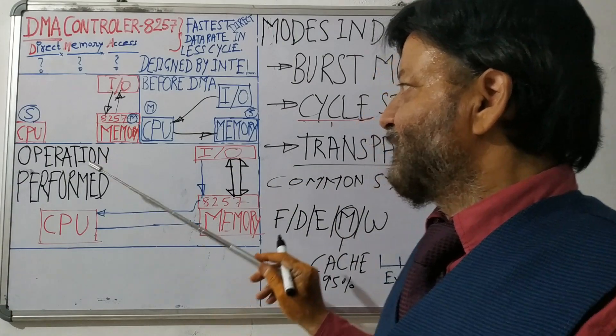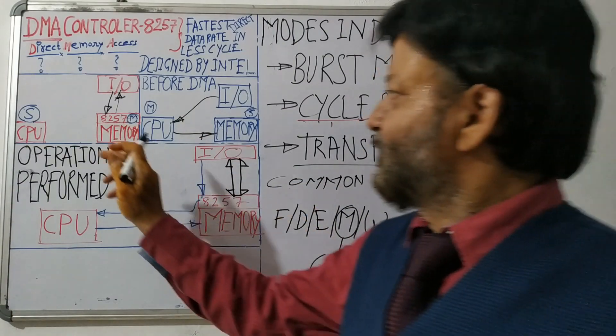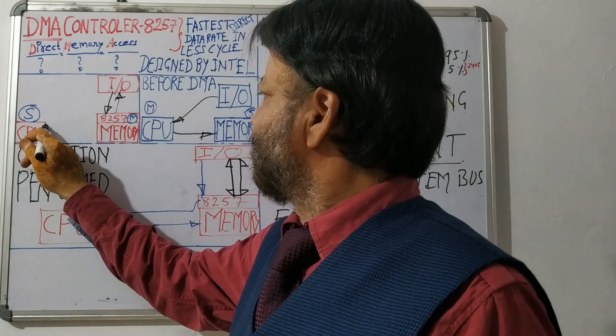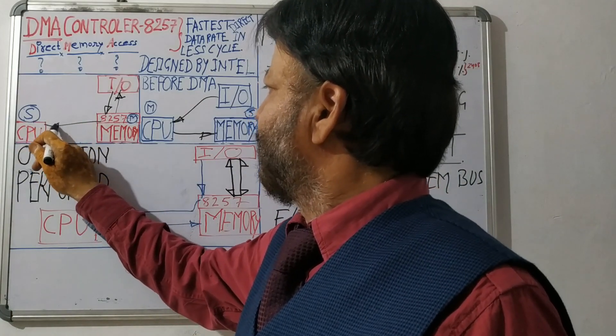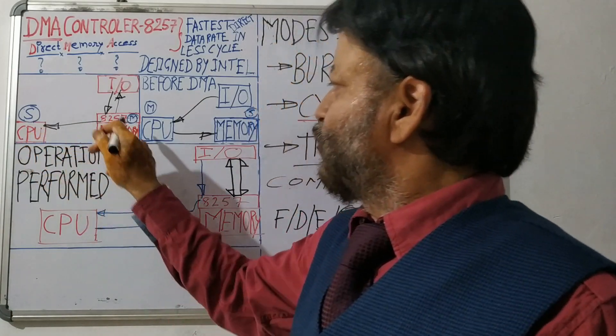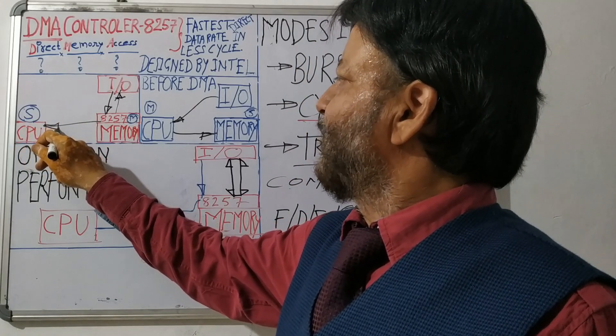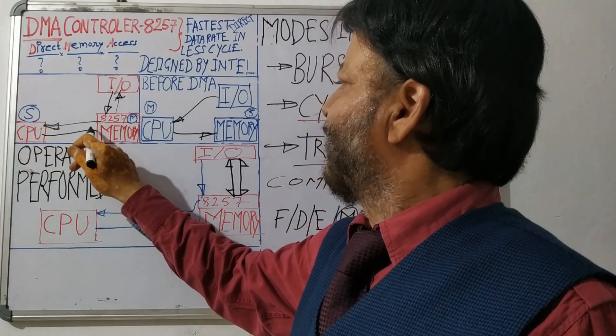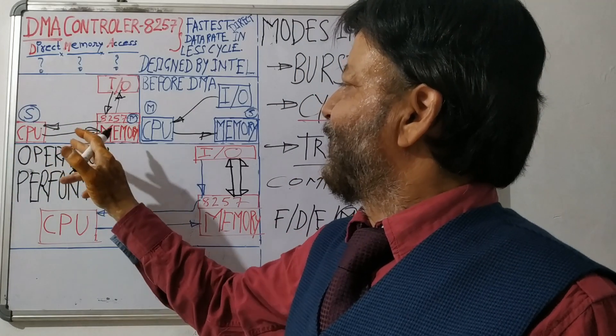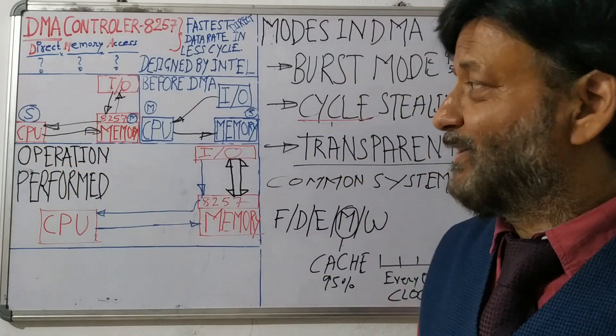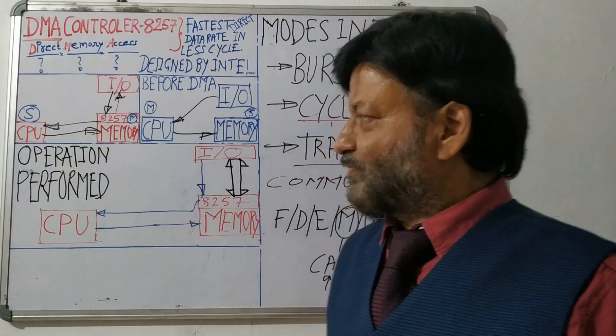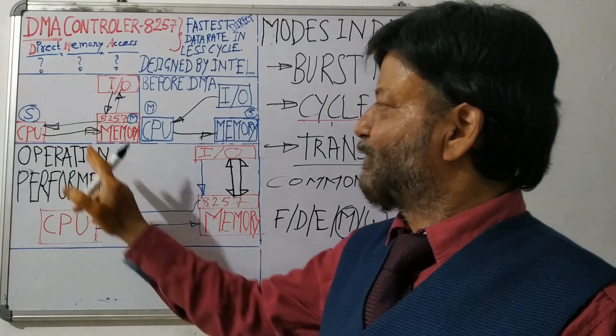So now when this operation is happening, still memory has to take permission or has to take, you can say, access to the bus. So what is the issue here? Issue here is that system bus.